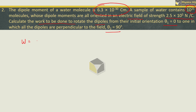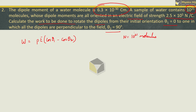Here is the work done formula for a dipole: work equals dipole moment P into electric field E, multiplied by cos of initial angle minus cos of final angle. Now this will be the work done for rotating one molecule. But here we have 10 raised to 21 molecules. Let us call this capital N. So total work done will be N into P E times (cos theta 1 minus cos theta 2).